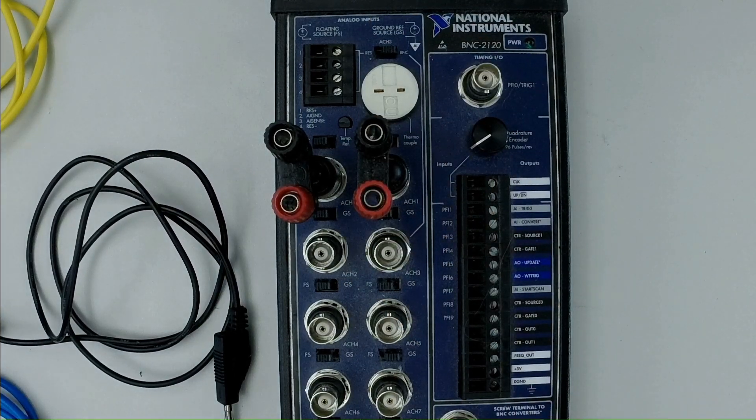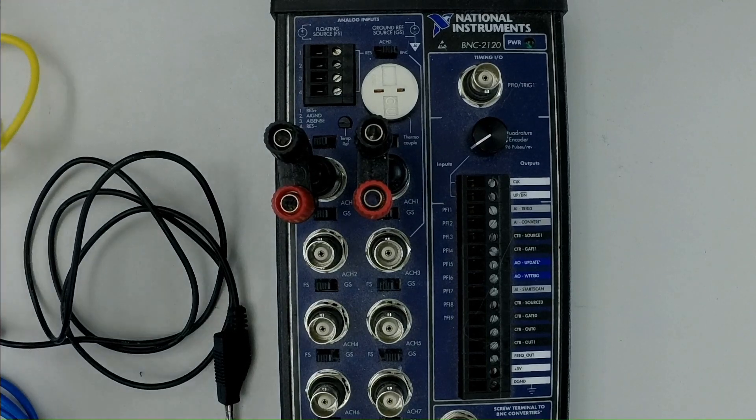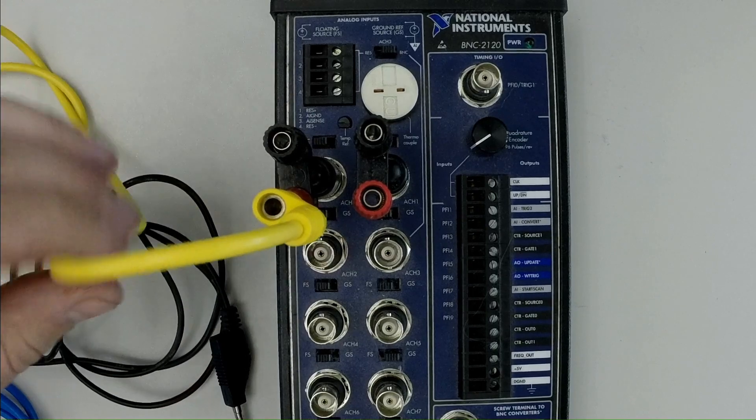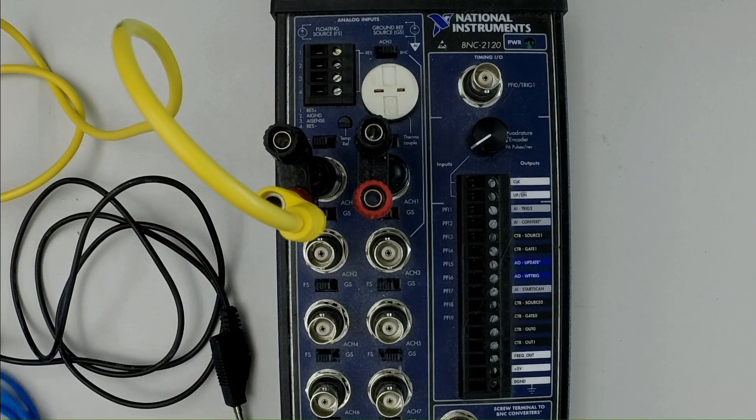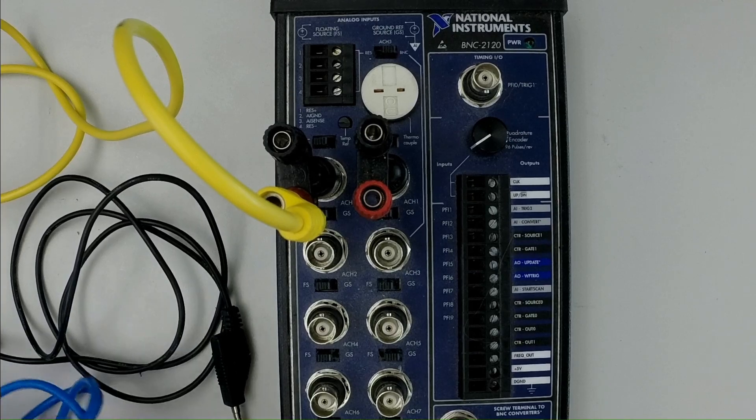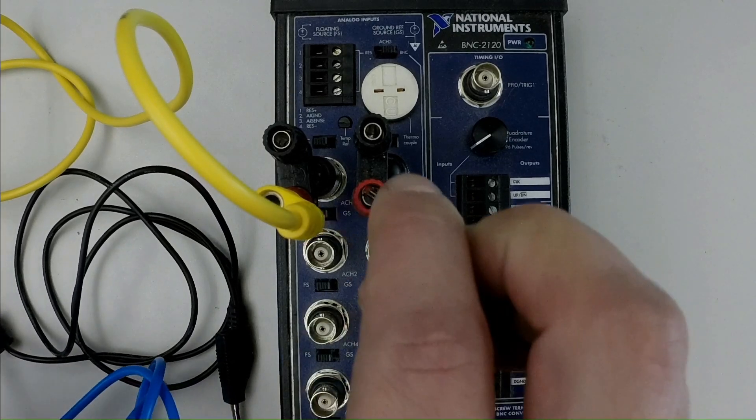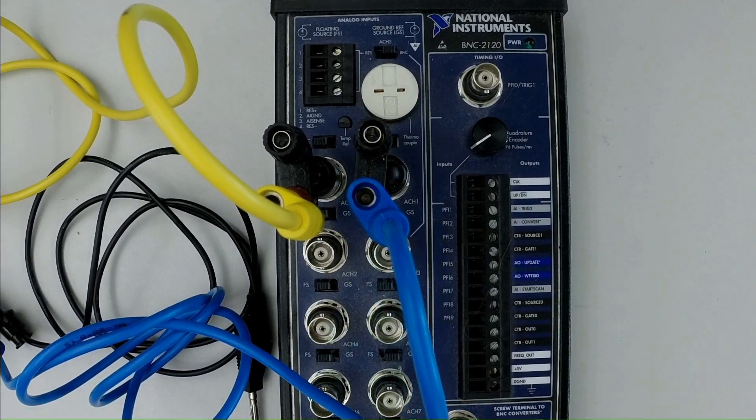So our audio right channel was the yellow alligator clip. So I'm going to go ahead and take that and I'll plug it into the red terminal because that's the positive wire. The audio left was my blue wire and that forms the positive of the second channel. And now I need to connect both of these channels to ground.